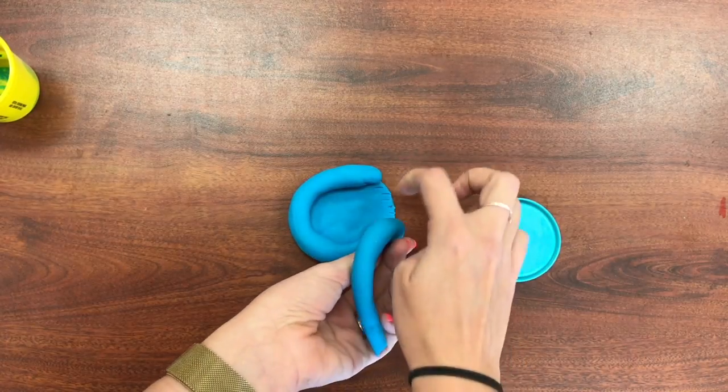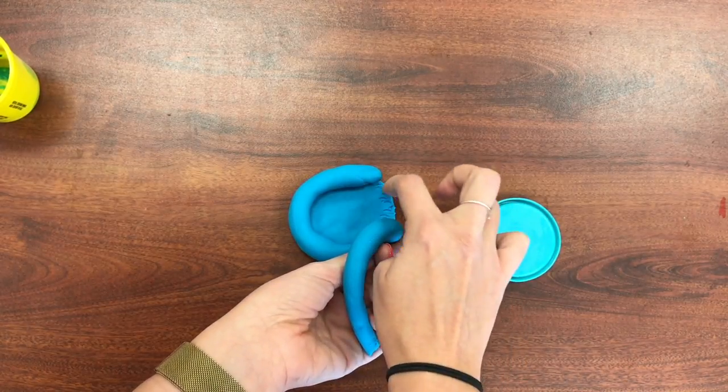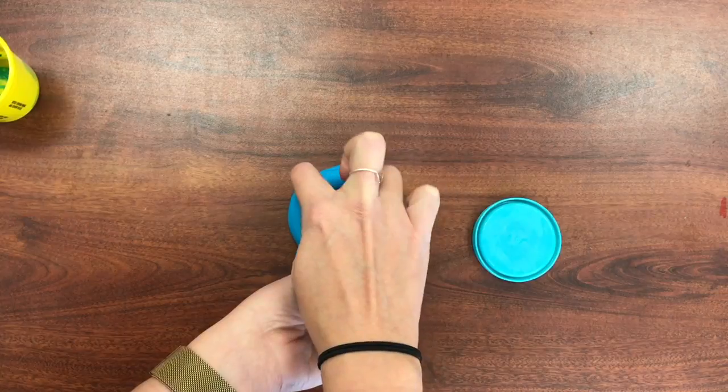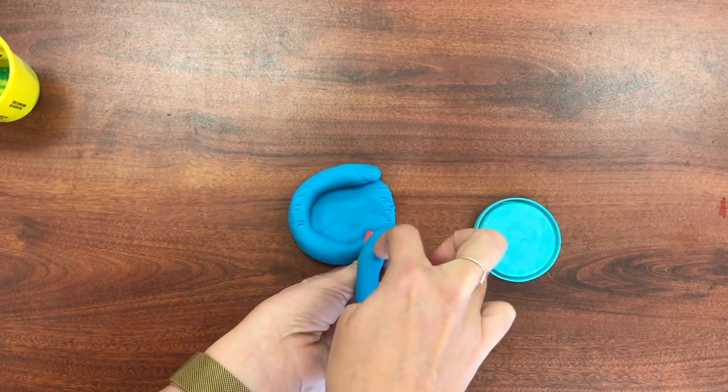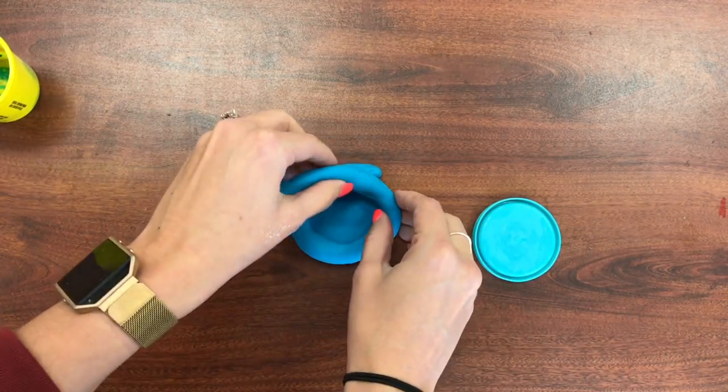And it helps it to stick better on there and it doesn't want to come up. So you would have to add that score onto your coil as well where your coil sticks to each other.